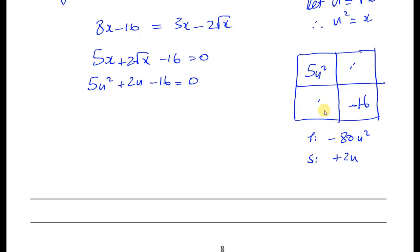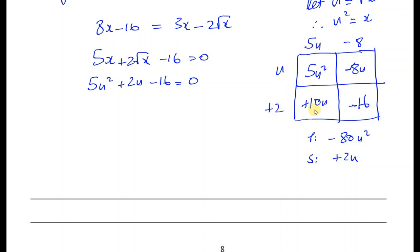So we use plus 10u and minus 8u. Taking out the common factor u from the first two terms and 5u from the last two terms gives the factorization. Checking: minus 8 times plus 2 gives minus 16, which is correct. So we get the factorized form: 5u minus 8 times u plus 2 equals 0.